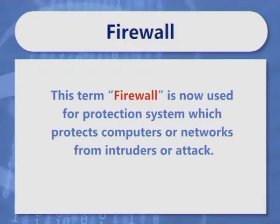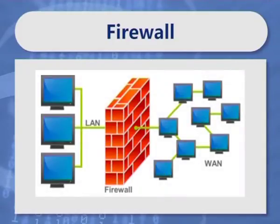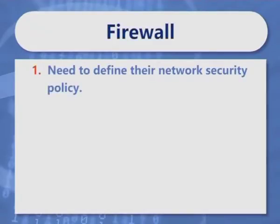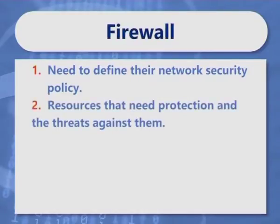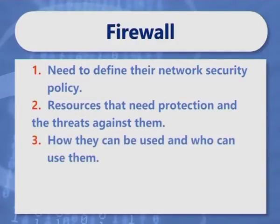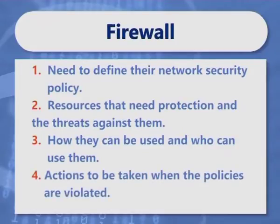The term firewall is now used for a protection system which protects computers or networks from intruders or attackers. The figure shows an example of a firewall installed between a LAN and a WAN. For a firewall to be effective, any organization first needs to define their network security policy. A network security policy identifies the resources that need protection and the threats against them. It then defines how they can be used and who can use them. It also stipulates the actions to be taken when the policies are violated. The firewall is responsible for filtering traffic according to the security policy.